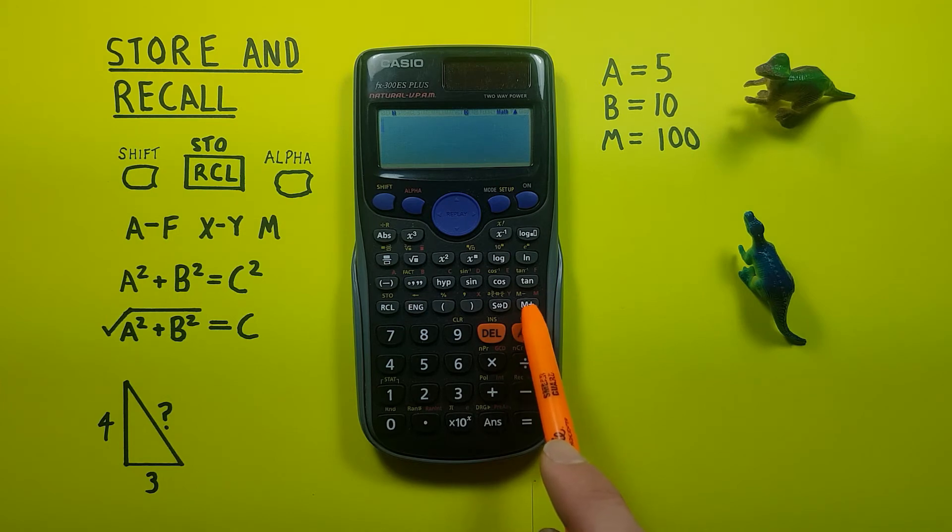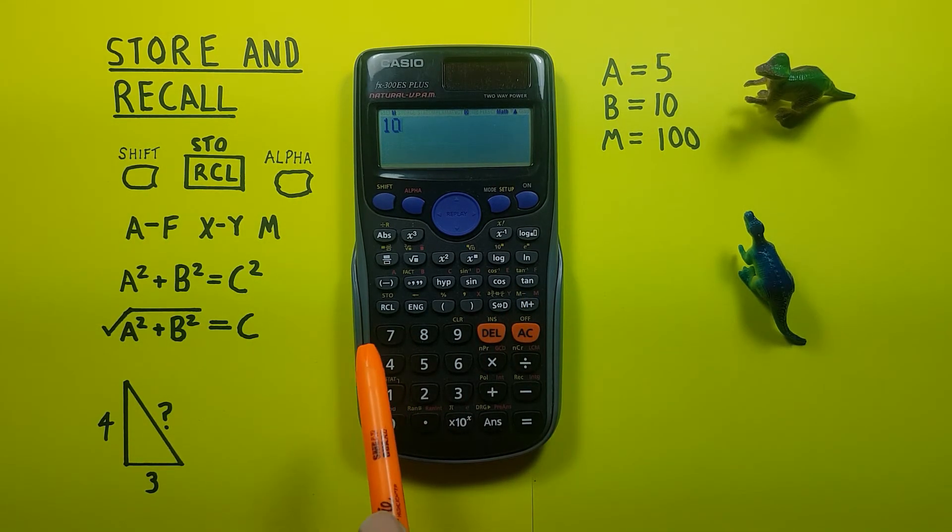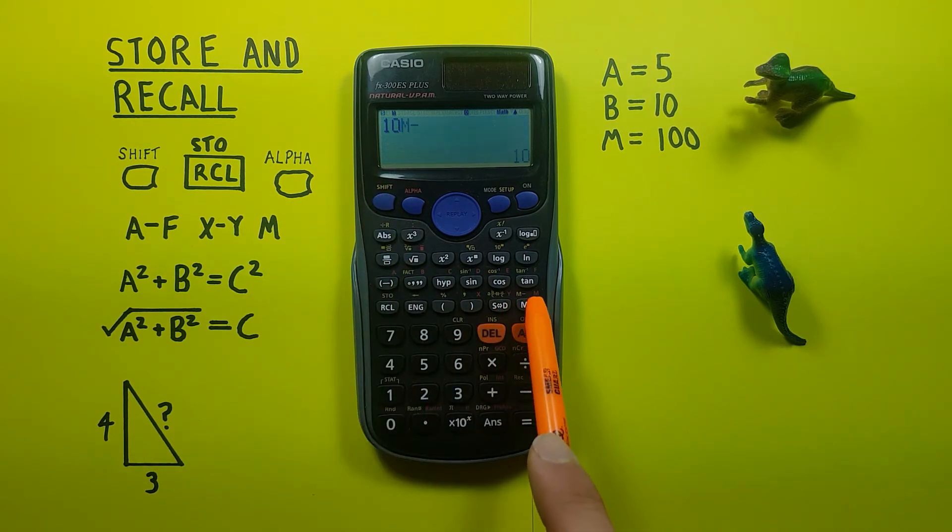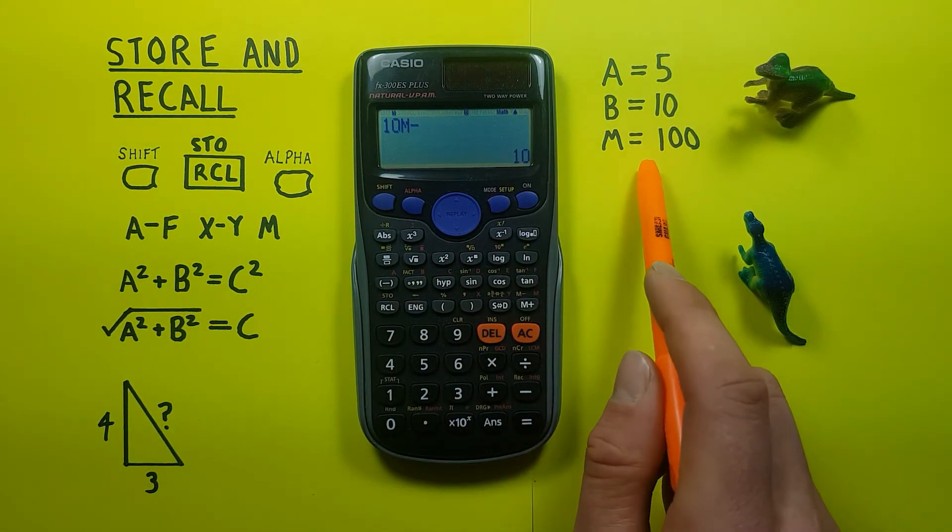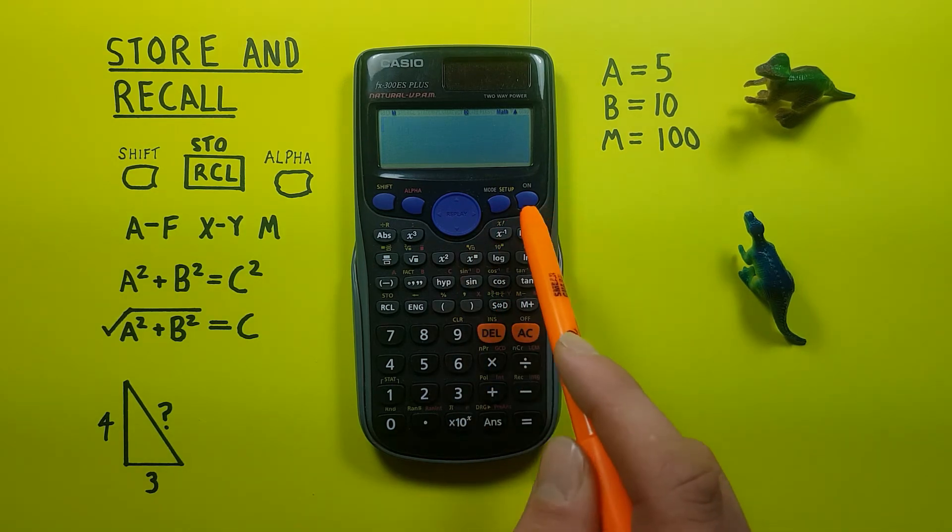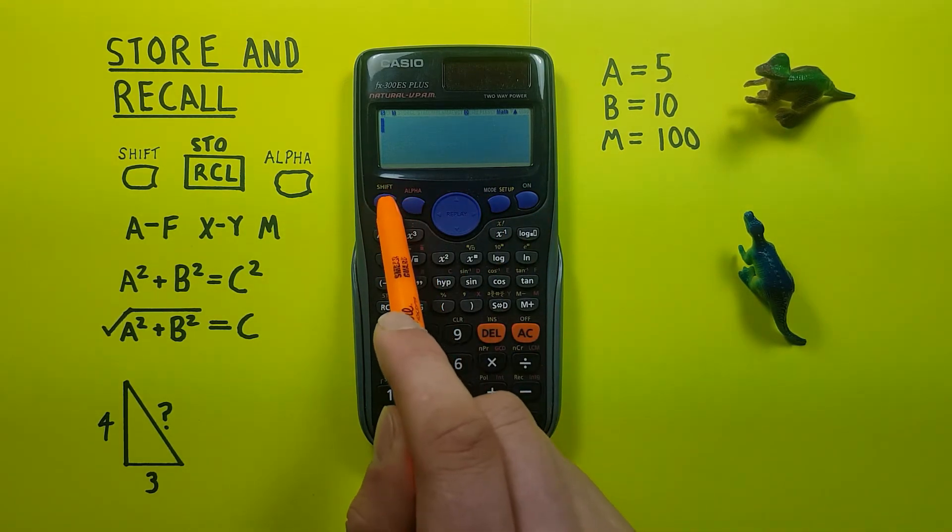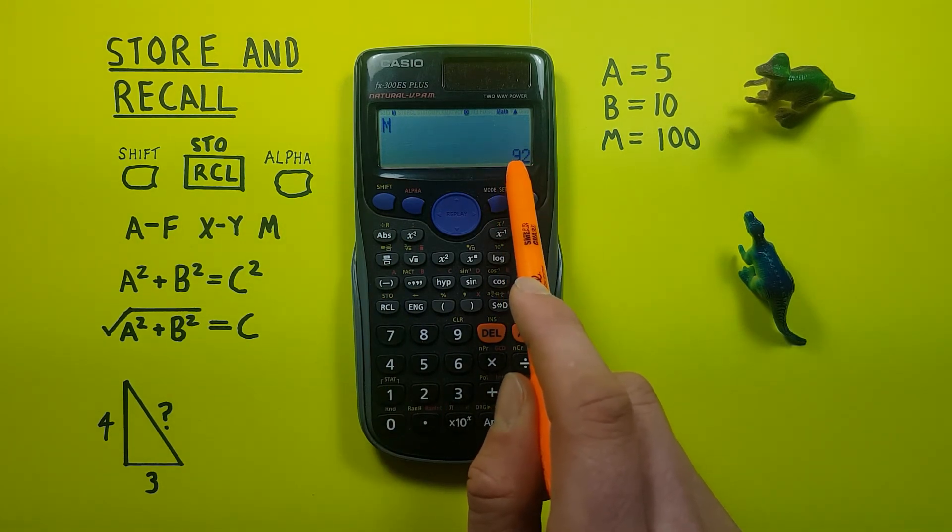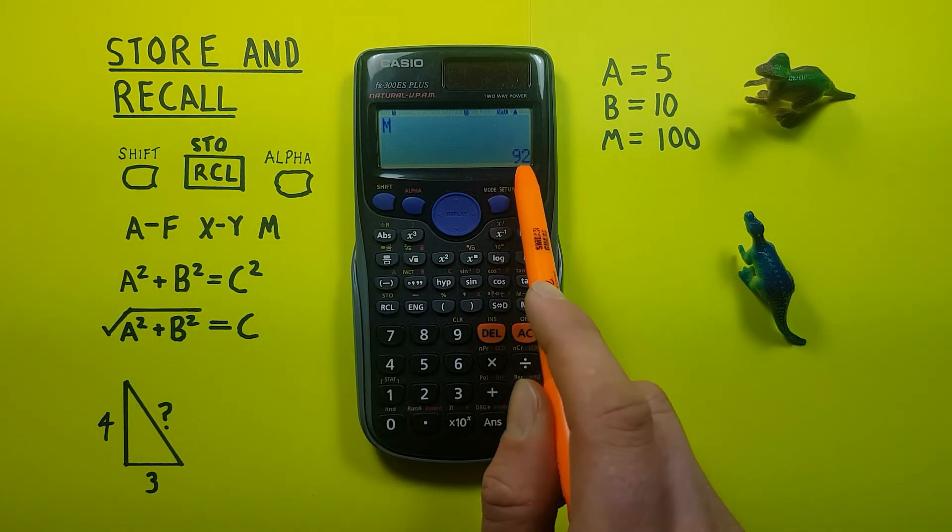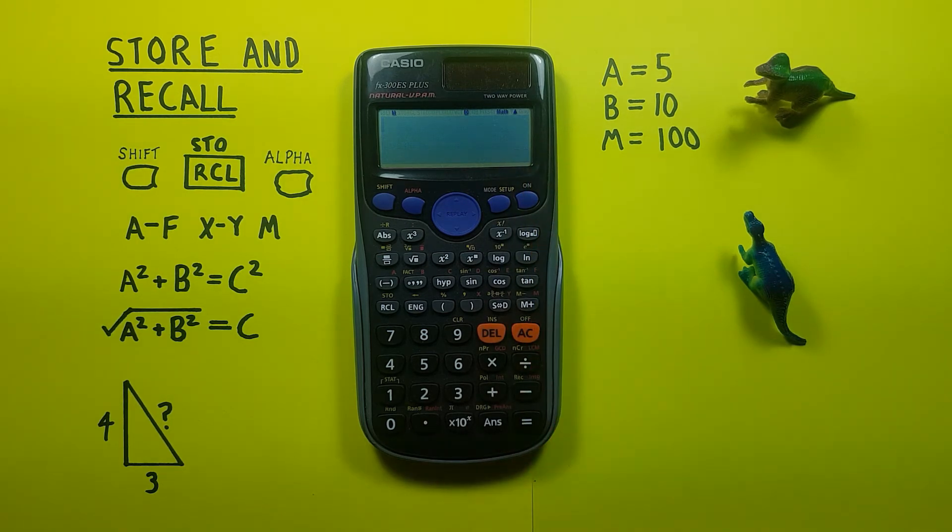You can see if we recall our M, it's now at 102. And we can subtract from this with the shift function of this key, which is the M minus. So put 10 on there and then shift M minus, that's subtracting 10 from our M value. And if we recall that M again, we see it's now at 92 because we had 102 and it's down to 92 now.